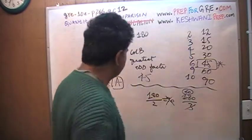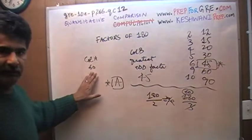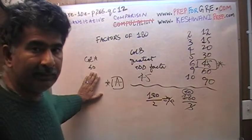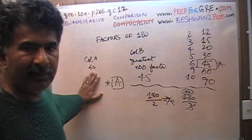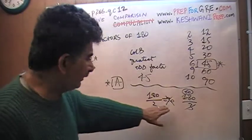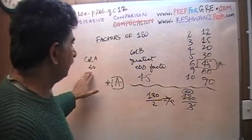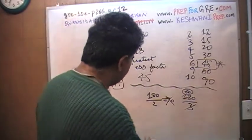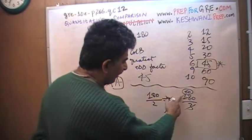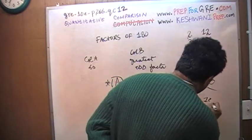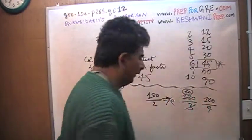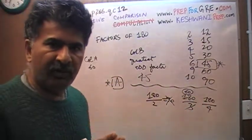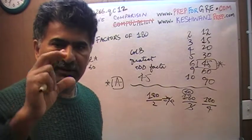There you go, that's an even number. So that is your greatest even factor of 180 that is less than 90, in other words, greatest even factor of 180 other than 90. In the second column, we're looking for the greatest odd factor. Let's divide 180 by 4.